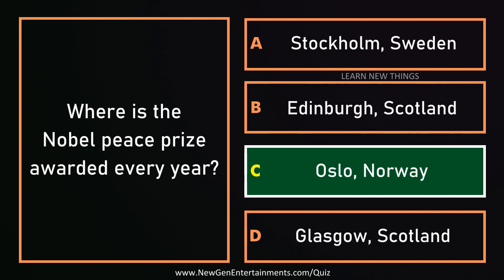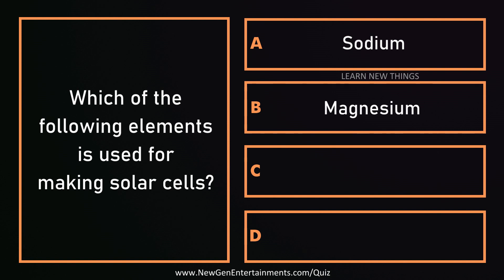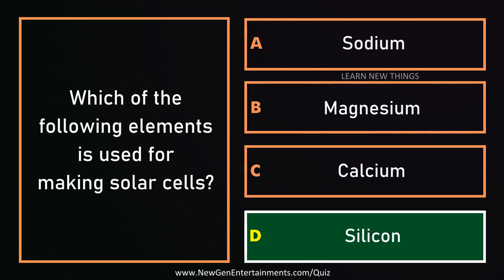Where is the Nobel Peace Prize awarded every year? Oslo, Norway. Which of the following elements is used for making solar cells? Silicon.